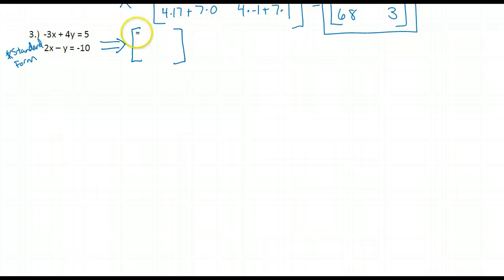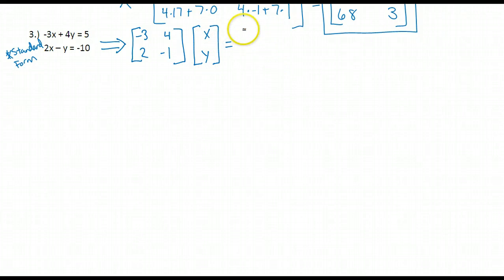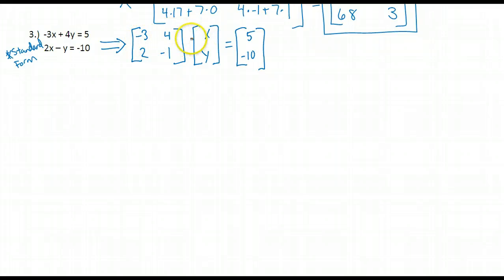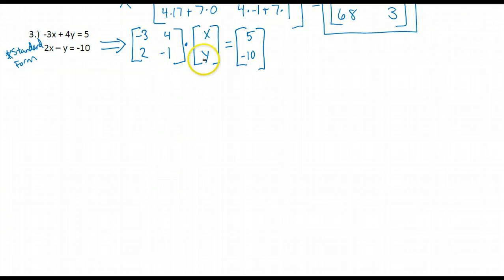My matrix equation is going to look like this. I'm going to have a matrix of my coefficients: negative 3, 4, 2, negative 1. I'm going to have a matrix of my variables, x and y, and set it equal to my answers. If I take this row times this column, I get negative 3 times x plus 4 times y, which equals 5 — that's my first equation. 2 times x plus negative 1 times y equals negative 10 — that's my second equation.